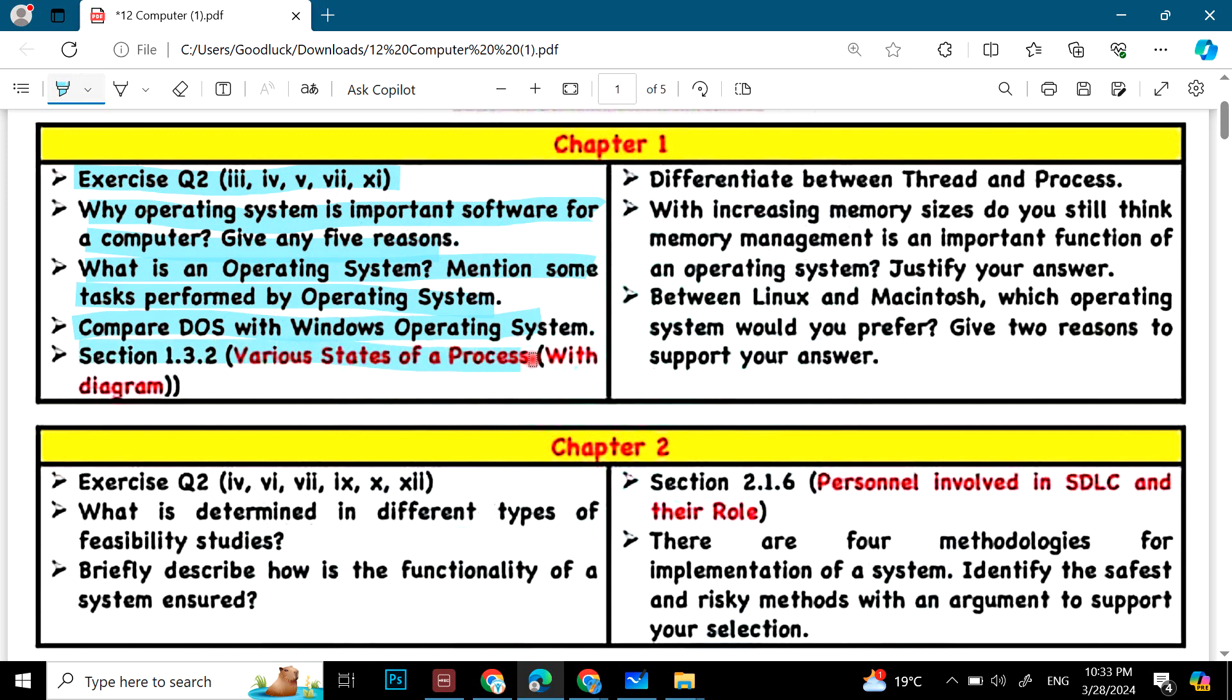Then section 1.3.2, various states of process with diagram. Then differentiate between thread and process with increasing memory sizes. Do you still think memory management is an important function of an operating system? Justify your answer. And then we have between Linux and Macintosh, which operating system would you prefer? Give two reasons to support your answer. This is from chapter 1.